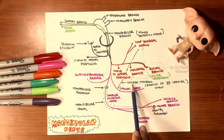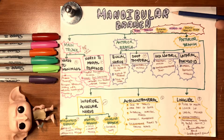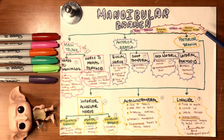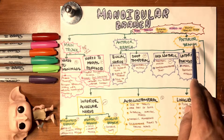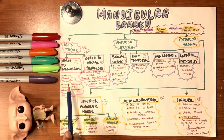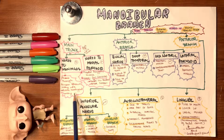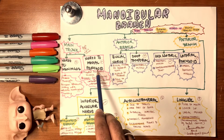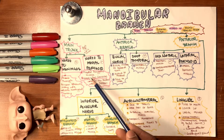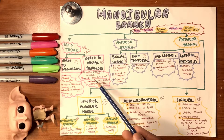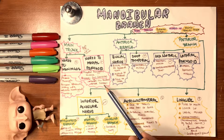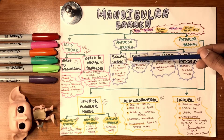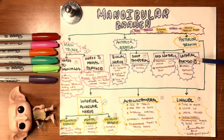The mandibular nerve passes through foramen ovale in the middle cranial fossa as a mixed nerve with a main trunk, anterior trunk, and posterior trunk. The main trunk gives off: the nerve to the meninges (passes through foramen spinosum alongside the middle meningeal artery, supplying the scalp and middle cranial fossa), and the nerve to the medial pterygoid (motor to the medial pterygoid muscle; after the otic ganglion, branches to tensor veli palatini and tensor tympani). The anterior trunk has four branches: buccal nerve — 100% sensory; and deep temporal, masseteric, and lateral pterygoid nerves — all motor.